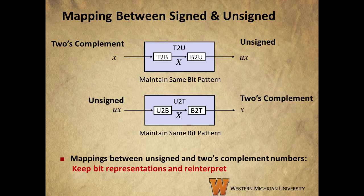How do we map between signed and unsigned integers? The answer is simple: we just keep the same bit pattern and reinterpret it. Going from two's complement to unsigned can be thought of as converting the two's complement value into a bit vector, then interpreting that bit vector as unsigned. We do basically the same thing in reverse to go from unsigned to two's complement.